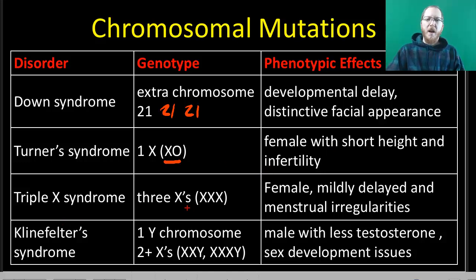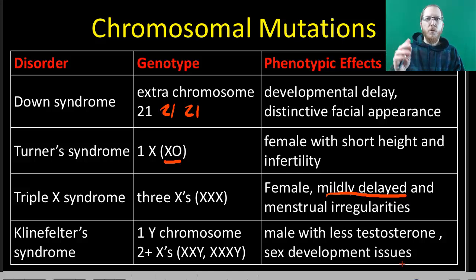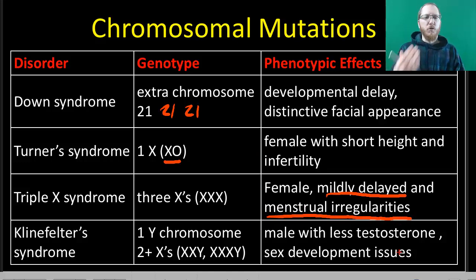Triple X syndrome is where you have three X chromosomes. For the most part, these will be relatively normal females with very mild mental delays — just a small amount, not where you would be incapable of functioning. They can also sometimes have menstrual irregularities, so they may not have a normal monthly menstrual pattern.